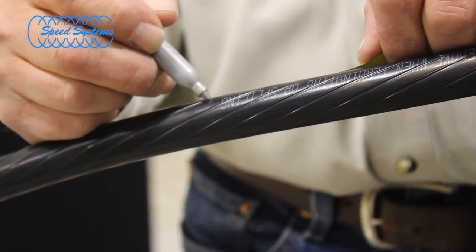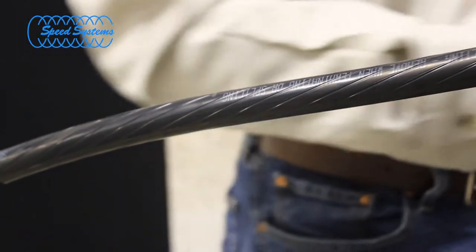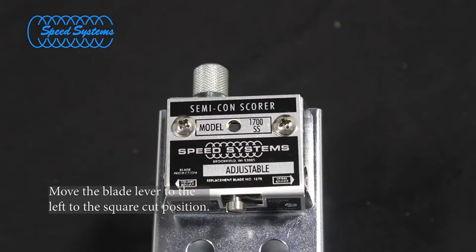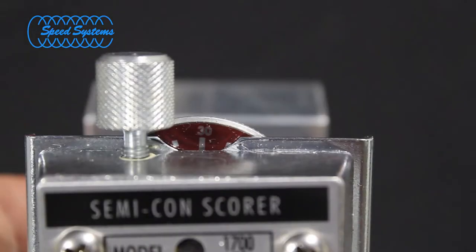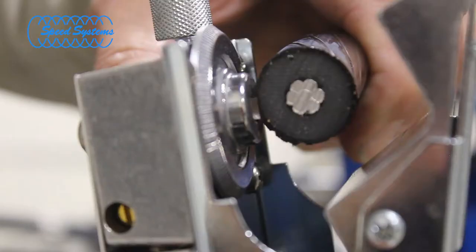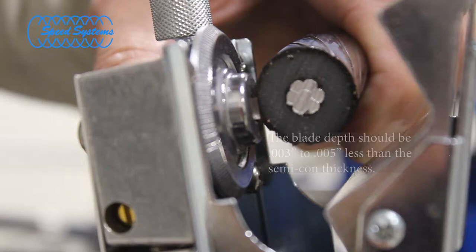Measure and mark the semi-con strip back according to the component manufacturer's instructions. Verify that the blade lever is in the square cut position and set the semi-con scorer blade depth to cut through most of the semi-con layer without cutting through to the insulation. Check the blade depth on a scrap piece of cable if one is available or by visually checking the blade at the end of the cable. The blade depth should be set to approximately 3 to 5 thousandths inch less than the semi-con thickness.